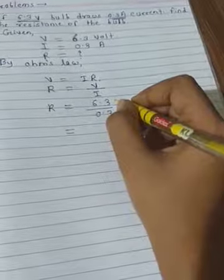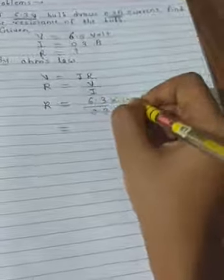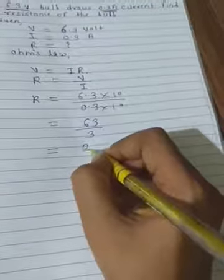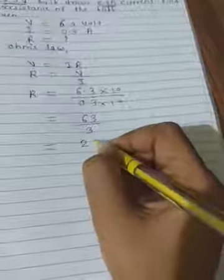So the answer will be 63 upon 3, which equals 21 ohms.